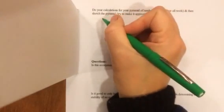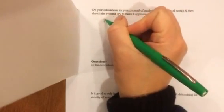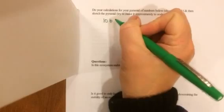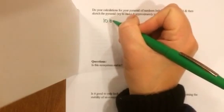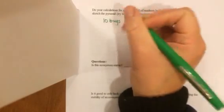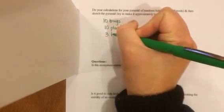Let's recap where we left off on Friday. Using my numbers, again you use your numbers, I had found that I had 10 birds—I'm sorry, I had 10 bugs—I had 10 plants, and I had 3 birds.